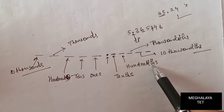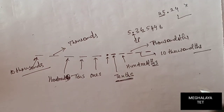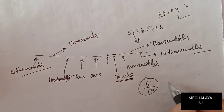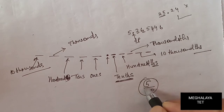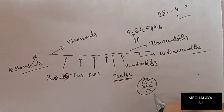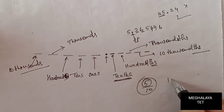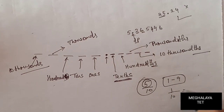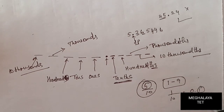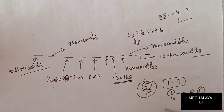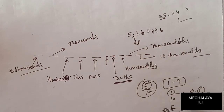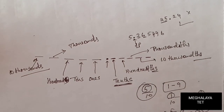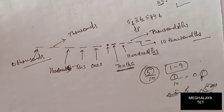The tenths place means any number divided by 10. For example, 1 divided by 10 equals 0.1 — so the 1 is in the tenths place. Similarly, 5 divided by 10 equals 0.5 — the 5 is in the tenths place. Any digit from 1 to 9 divided by 10 will be in the tenths place.